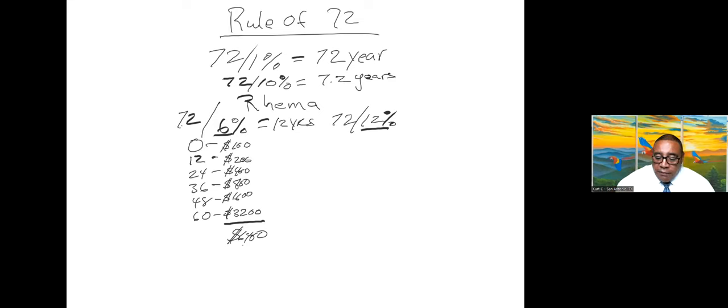So 12 into 72, that means that every six years our money would start doubling. So that means that at zero, if $100 is put in there for Rayma, then at 6, 12, 18, 24, 30, 36, 42, 48, 54, 60, all those would be doubles, family.